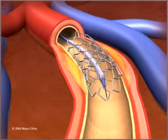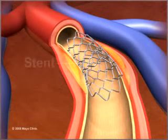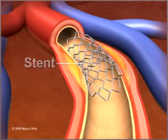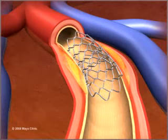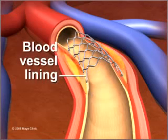Both catheters and the wire are then withdrawn. About 70 to 90% of coronary angioplasty includes placement of a stent, a wire mesh tube that holds open weakened arteries. The stent may prevent re-narrowing after an artery is widened, and it stays in place permanently as the blood vessel lining heals over it.